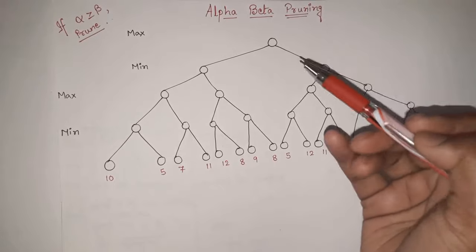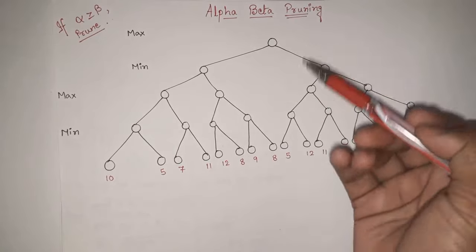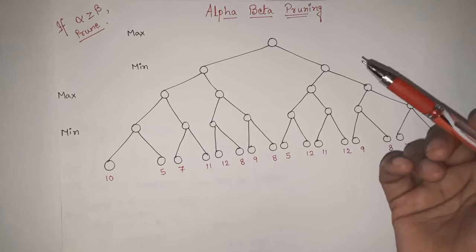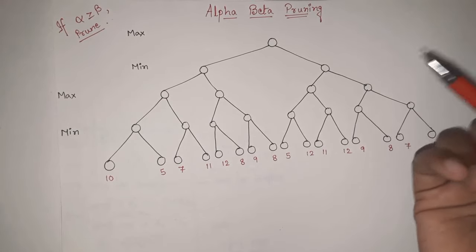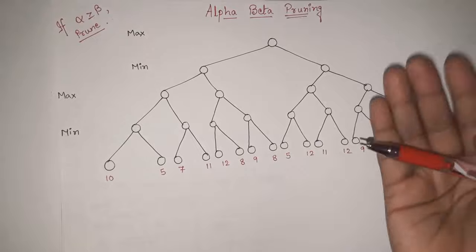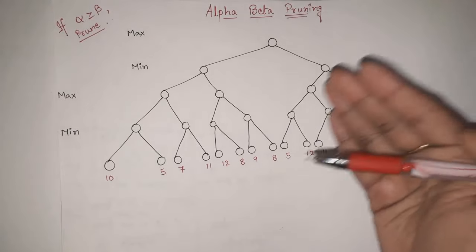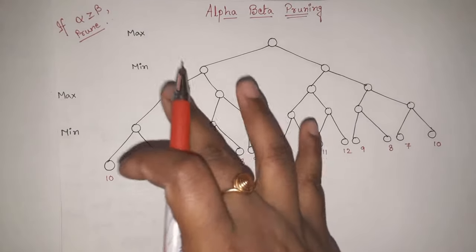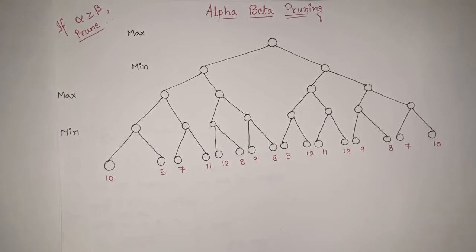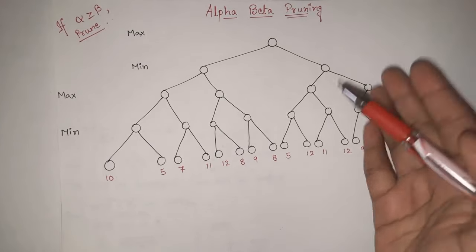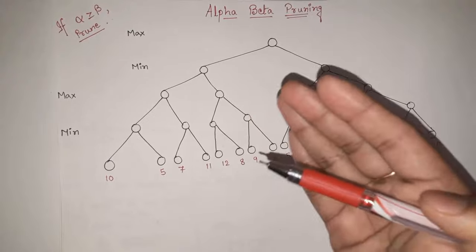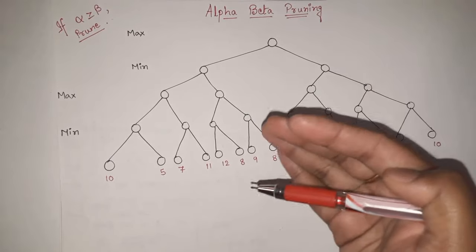What is the requirement of this alpha-beta pruning? In my previous video, we discussed the min-max algorithm. What was the disadvantage of min-max algorithm? In min-max algorithm, we had to traverse each and every node of the given tree. But in case of alpha-beta pruning, we are going to traverse only those nodes that are required.